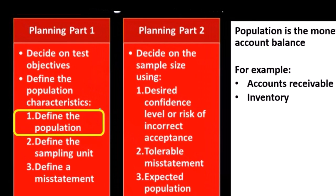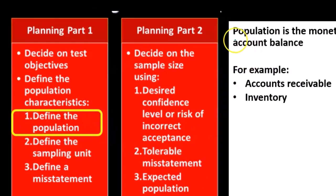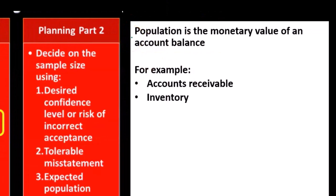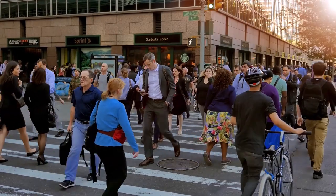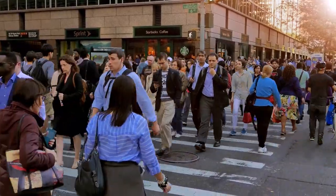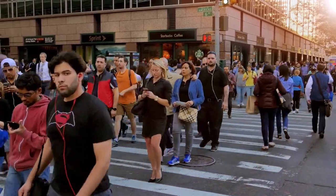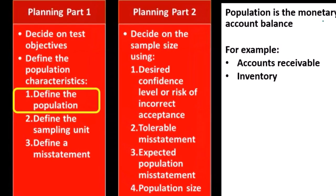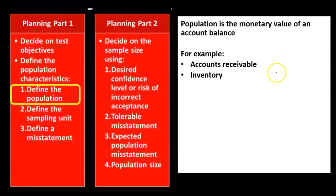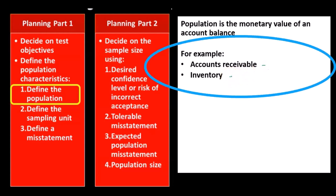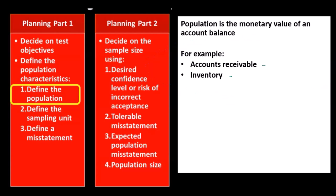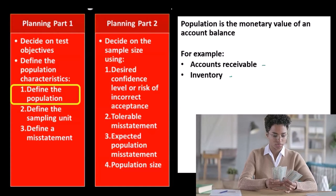Within defining the characteristics, we need to define the population. Recall that the population is the monetary value of an account balance. When we think about sampling size for dollar amounts, the population is the monetary value of an account balance. For accounts receivable, the population size is basically the monetary balance — the amount on the balance sheet. Common accounts we're thinking of are accounts receivable and inventory. For inventory, they have units we can test, but here we are considering the monetary value — the amount on the balance sheet in monetary terms.